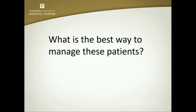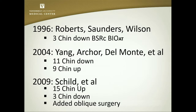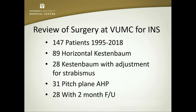I want to talk about the best way to manage these patients. There was very little in the literature when I started doing this. Ed Wilson and Rick Saunders had talked about three patients who had superior rectus recessions with anteriorizations of the inferior oblique. About 2004, Steve Archer and Monty Dalmonte and their group had 11 patients with chin-down head positions and primarily used a stepped approach — doing the superior rectus first and then, if need be, doing something to the inferior oblique. A third case series was in 2009.